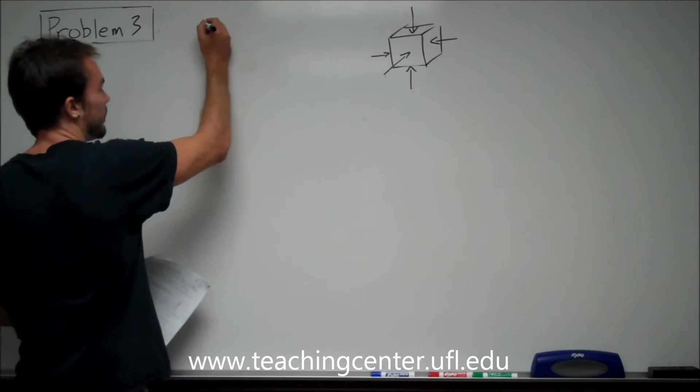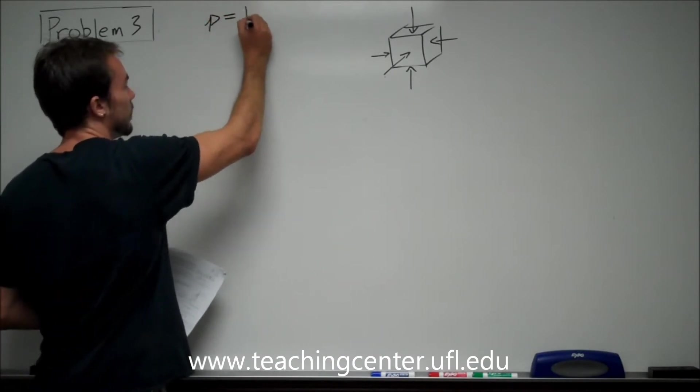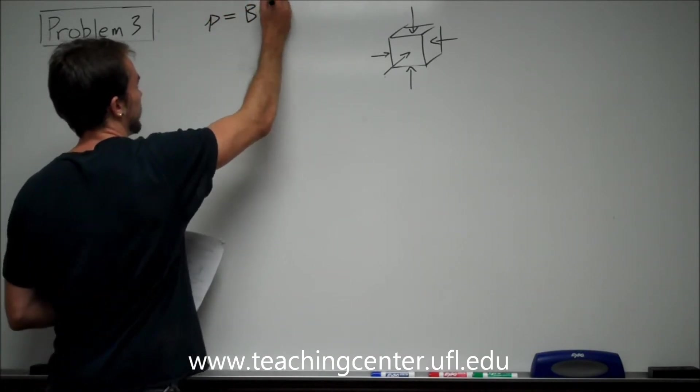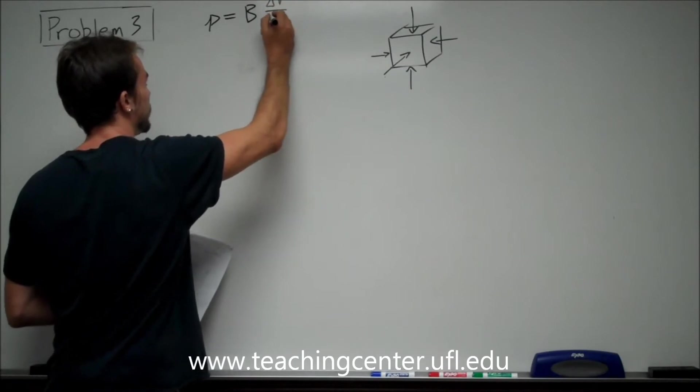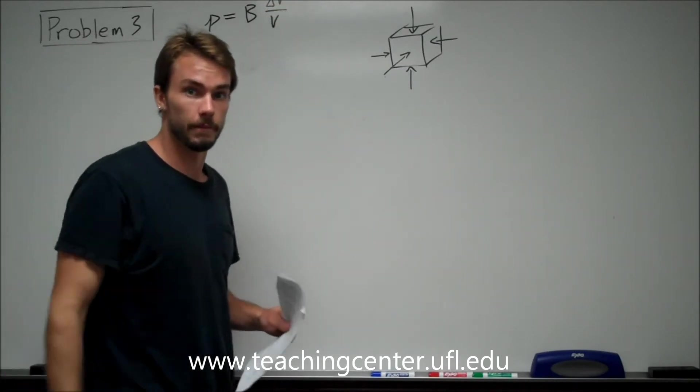So our formula we have states our pressure must be equal to our bulk modulus times the change in volume over the original volume.